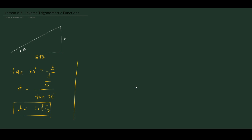We know that tangent theta equals opposite over adjacent, which is 5 over 5 square root of 3. To find theta, we need to use the inverse tangent.